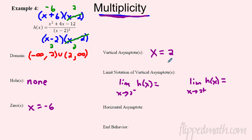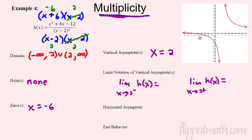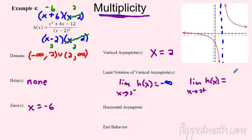Now for the limit notation at the vertical asymptote x = 2: the limit as x approaches 2 from the left of h(x), and the limit as x approaches 2 from the right of h(x). Looking at the pre-graphed picture: approaching from the left, the function goes down to negative infinity; approaching from the right, it goes up to positive infinity.